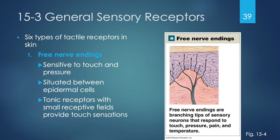Of six types of tactile receptors in the skin, the first are free nerve endings — resembling a tree with branches sticking up into the epidermis in between epidermal cells. These can be triggered by touch or pressure. They have tonic receptors and small receptive fields, making it easy to localize the sensation from a free nerve ending.